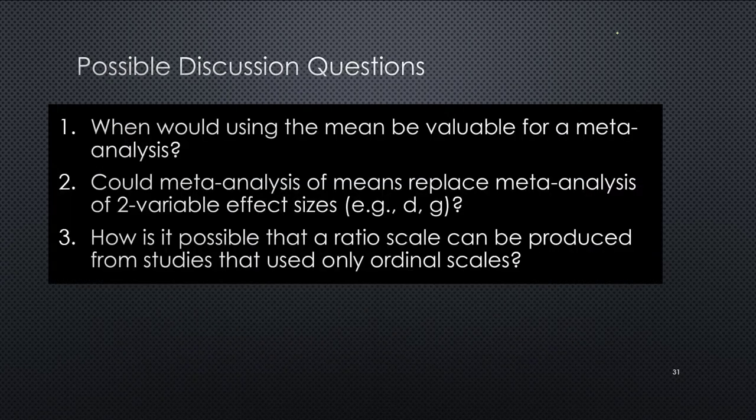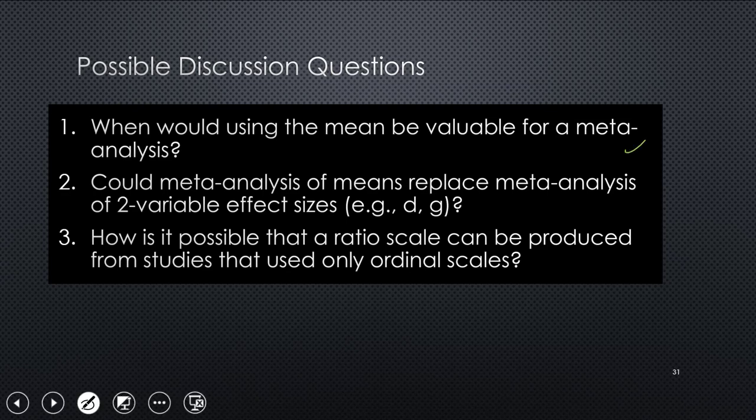Anyway, so I could leave you with a few possible discussion questions. I think I said a few more as I went through this. But first, when would using the mean be valuable for meta-analysis? I've given you some examples of how that might be the case. And I guess I would put it to you with your own meta-analysis. What would happen if you looked at mean values instead of a standardized mean difference? Could you just replace meta-analysis of two variable effect sizes using this strategy of meta-analysis of means? And this last one I left you with, this mystery of meta-analysis, is how is it possible that a ratio scale can be produced from studies that use only ordinal scales? I think that's magic. With that, I'll leave you till the next talk. Have a great day.